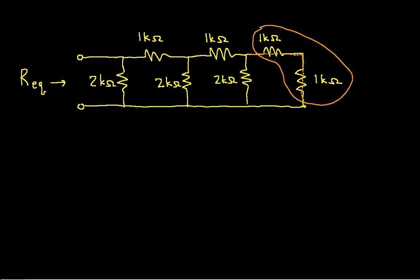There is no alternate path for the current. Any current that goes through the 1k ohm, the upper 1k ohm resistor goes through the lower 1k ohm resistor. So since these are series resistors, we have then that the equivalent resistance is going to be 1k ohm plus 1k ohm, which is 2k ohms.